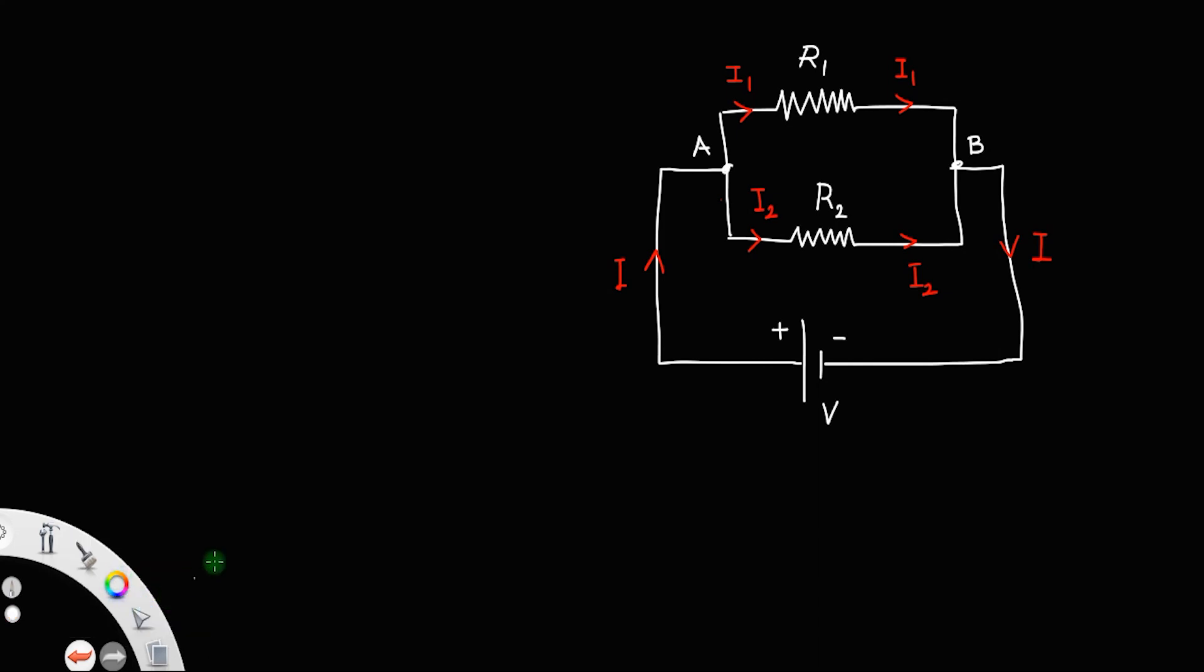Now, let us look at the resistors R1 and R2. Both these resistors are connected between the points A and B, so voltage remains the same. Also the current, the total current I will be I1 plus I2.